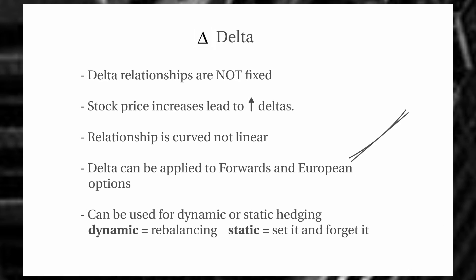Some other important points about delta: delta is definitely not fixed. It moves around along with the market, depending on a lot of factors such as interest rates and the change in prices. As that stock price increases, we tend to have an increase in delta as well. If we map out our delta at any given point, we don't find that it's a straight line — it tends to curve. A lot of this relationship will have to do with how in or out of the money the option is, time to expiration, and other factors.